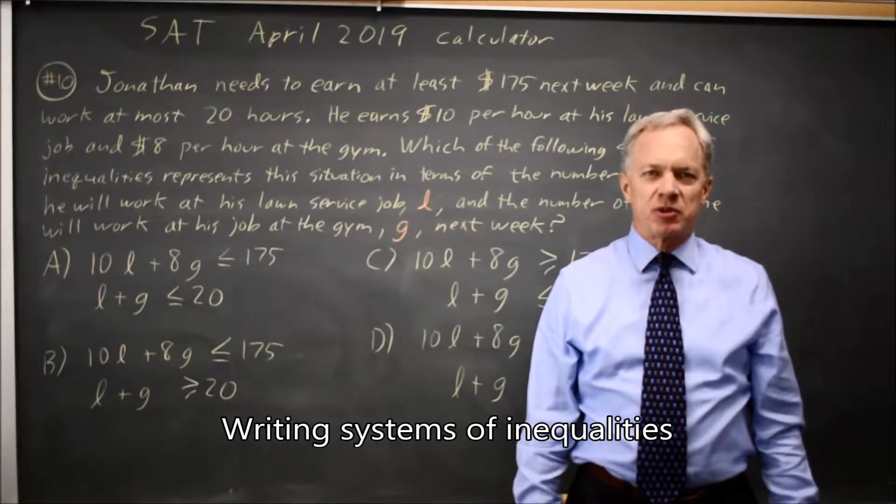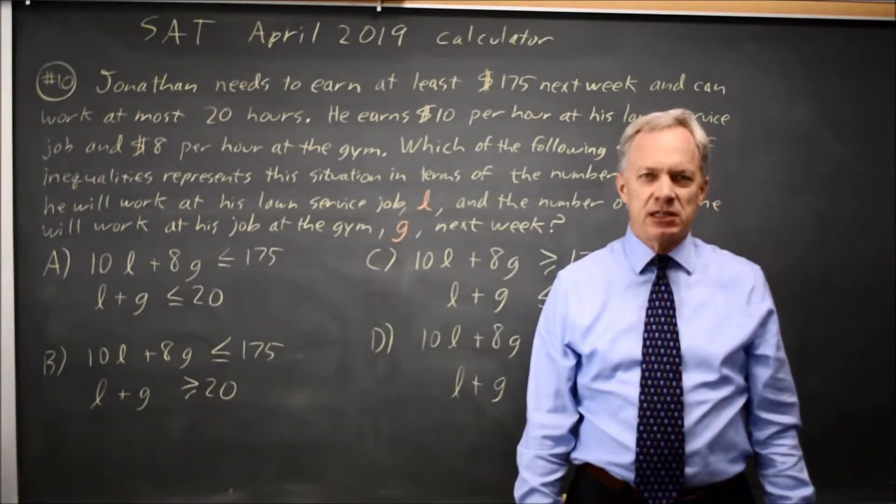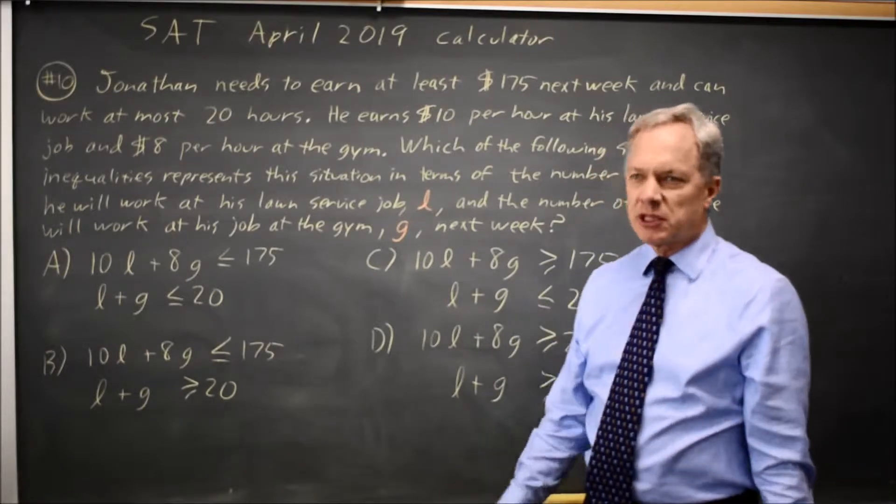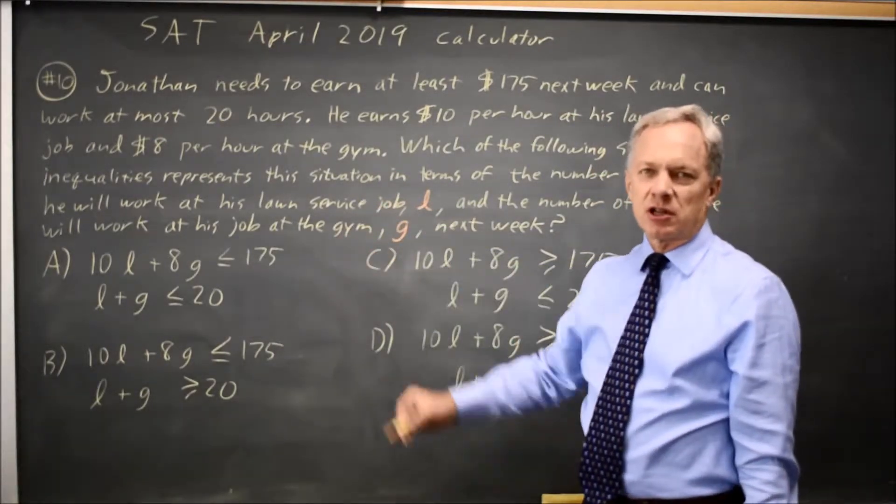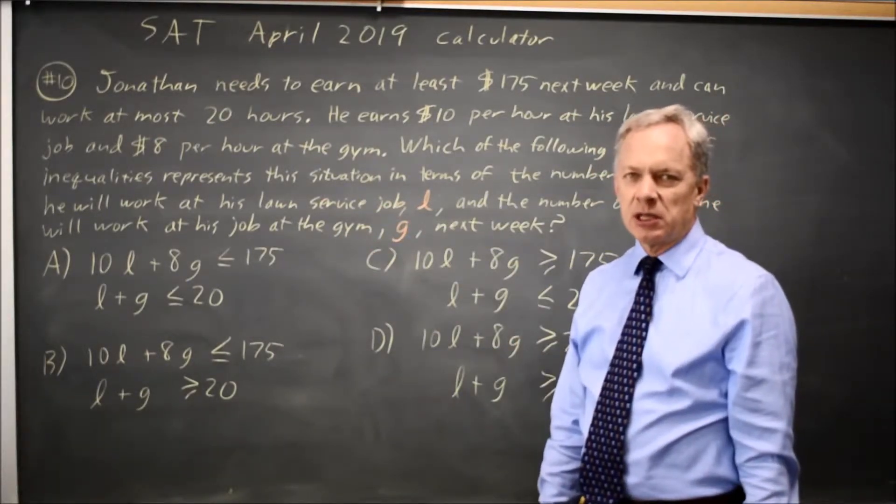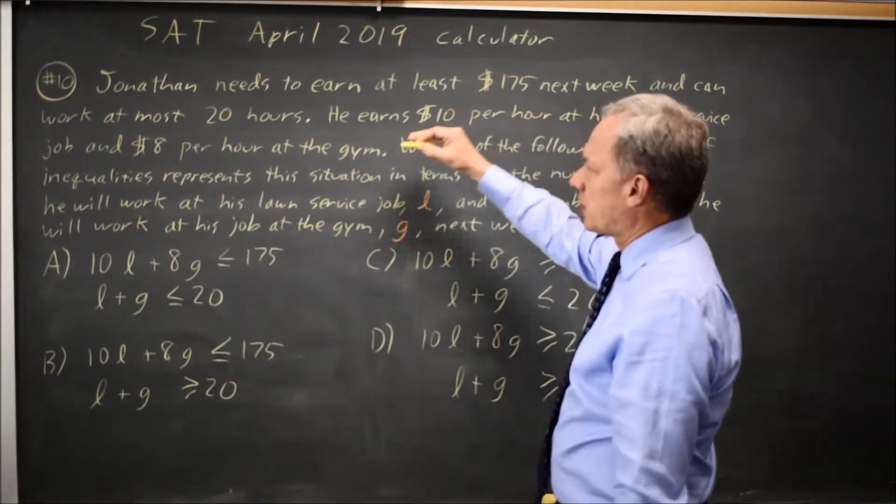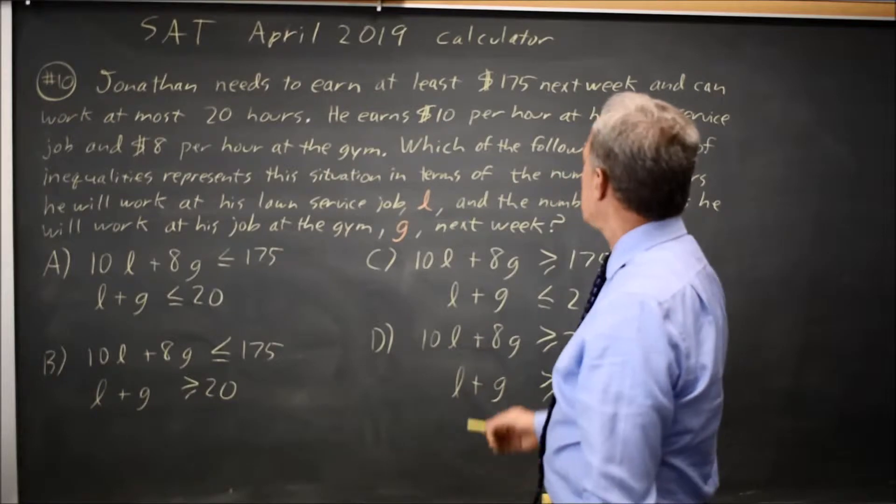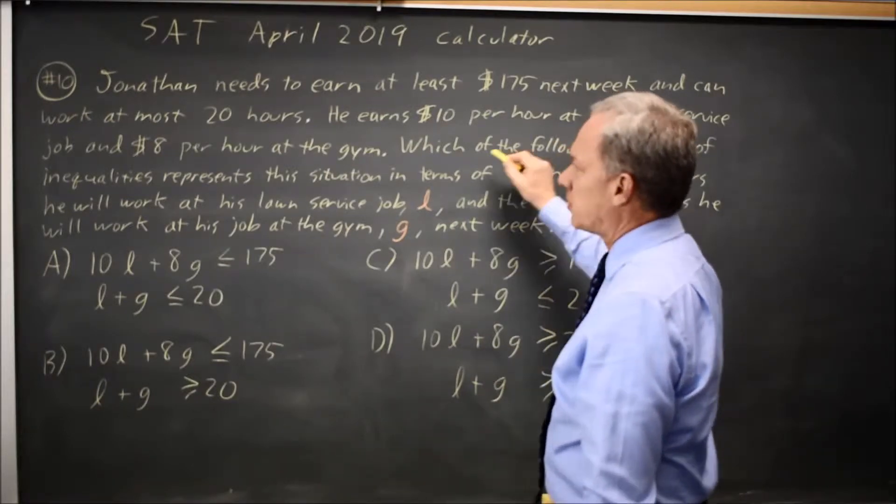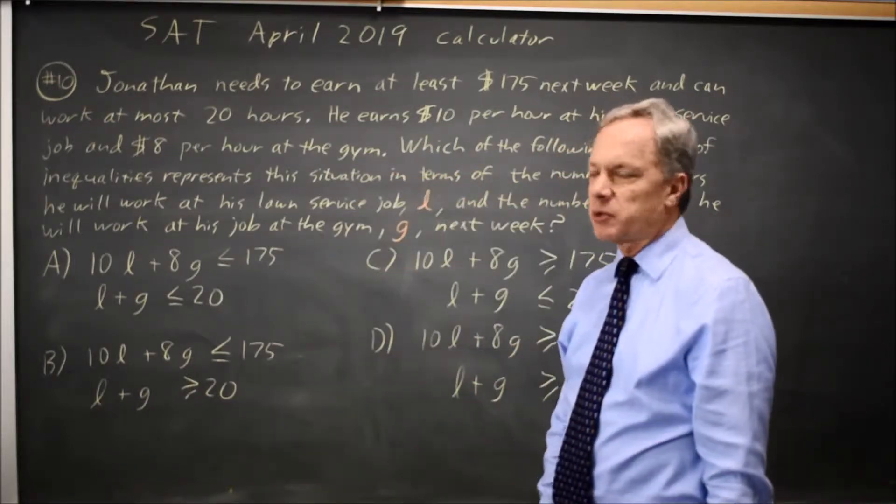This is calculator question number 10 from the 2019 SAT in April. College Board gives us a paragraph about Jonathan's work hours and income, and they say he wants to earn at least $175 and work at most 20 hours.